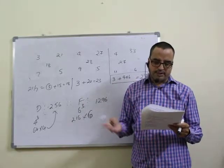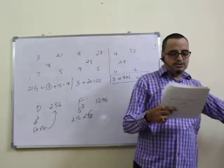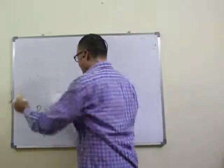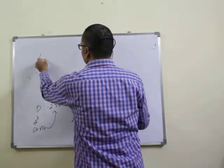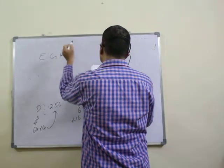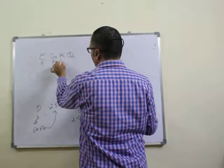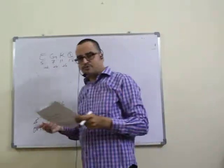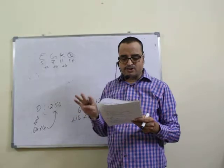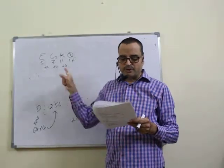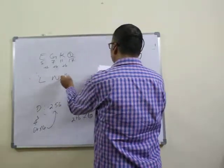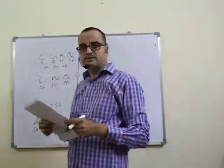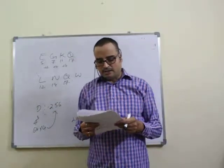Question twelve: find the odd word or letters — letter classification. First option: E G K Q — values 5, 7, 11, 17 — differences plus 2, plus 4, plus 6. Second option: C E I O — same pattern. Third option: L N Q W — values 12, 14, 17 — differences plus 2, plus 3 — not matching. So twelfth question answer is third option.